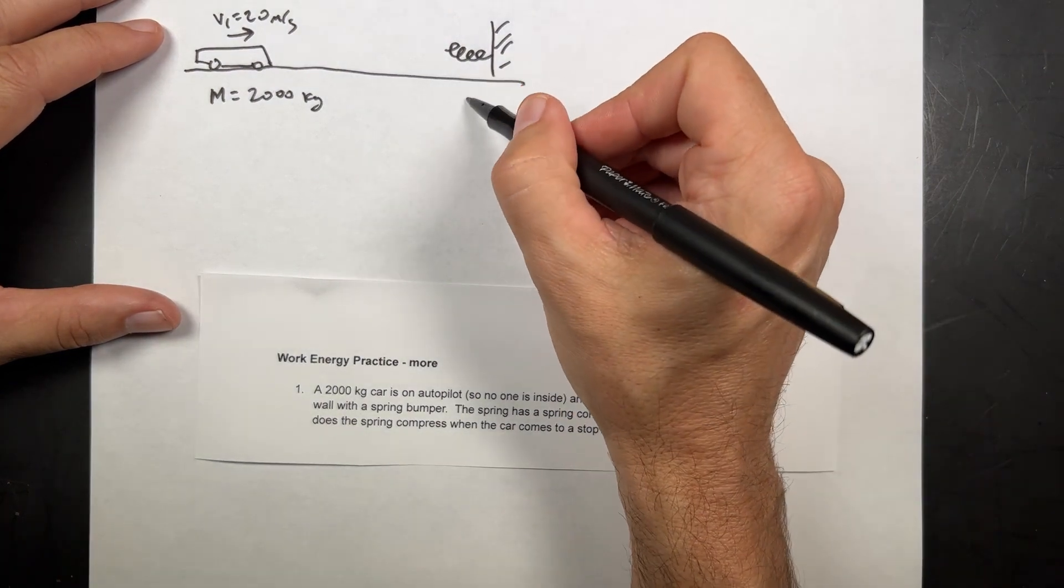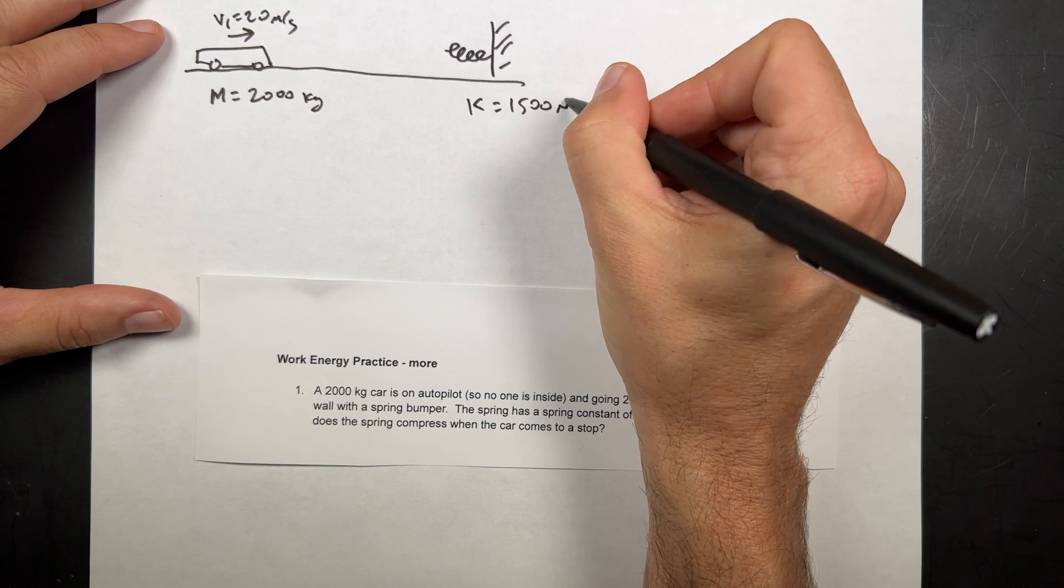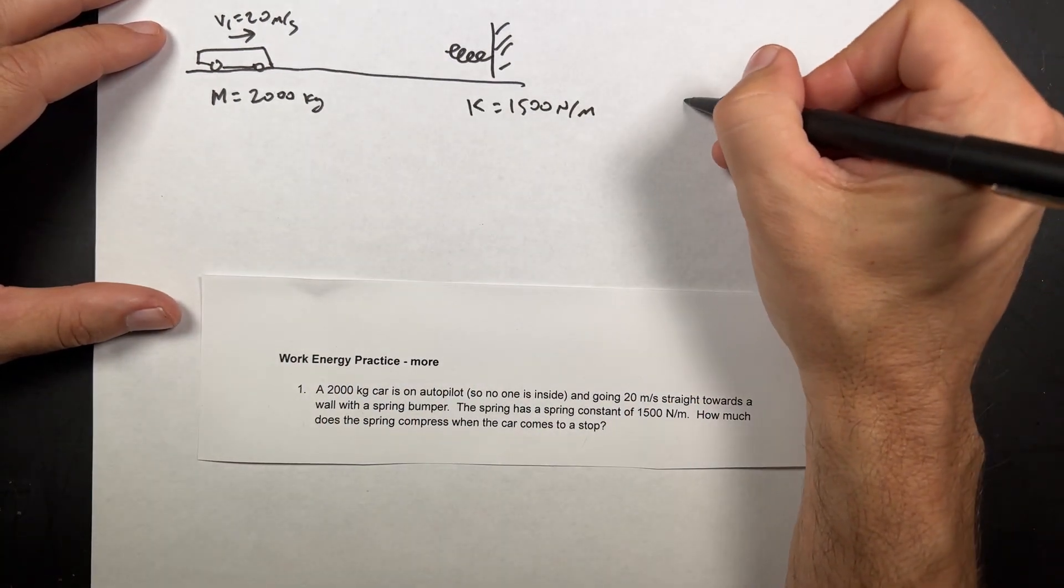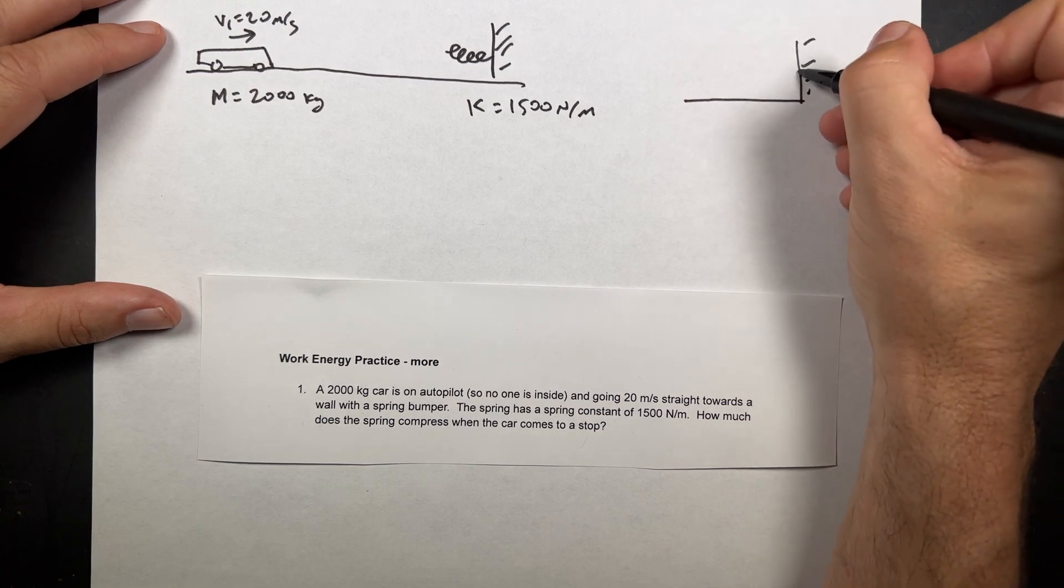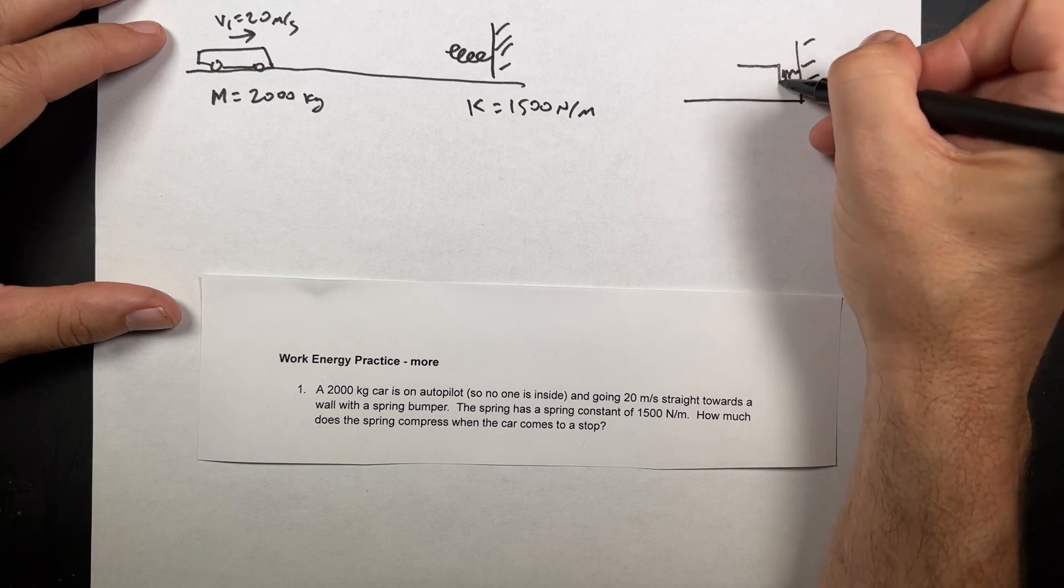And what else do I have? I have K over here, K is 1500 newtons per meter. Now, the car is going to crash into the spring, so let's just draw it like that. Here's my car, and I'm going to draw this super scrunched up, and there's my better car.